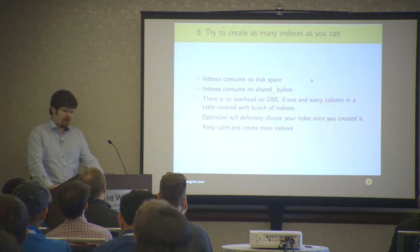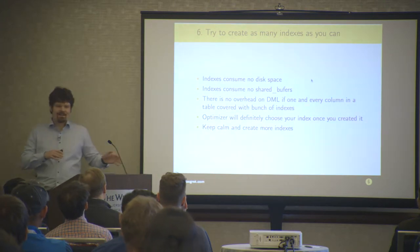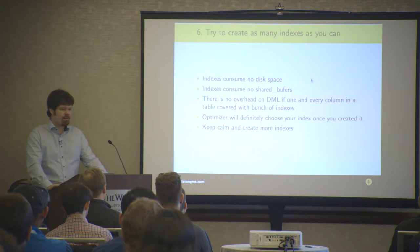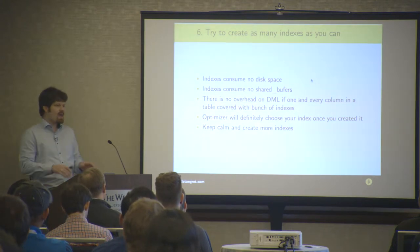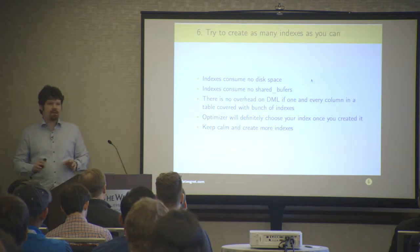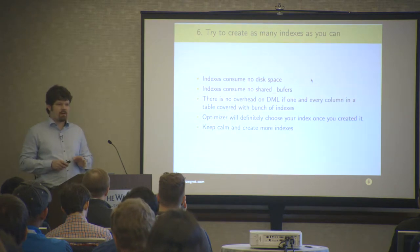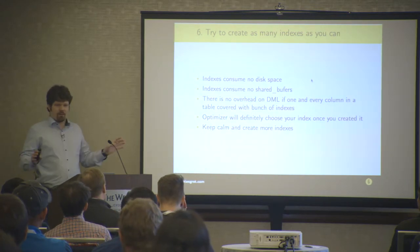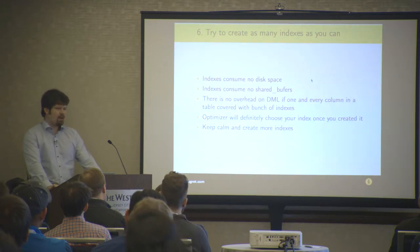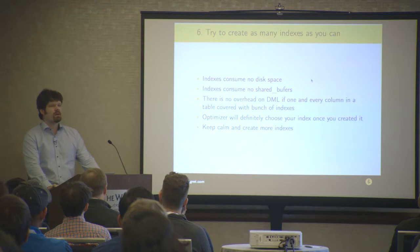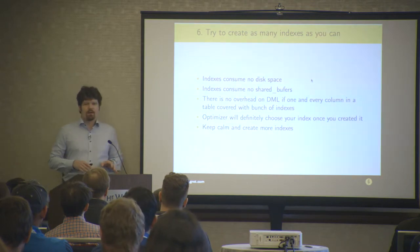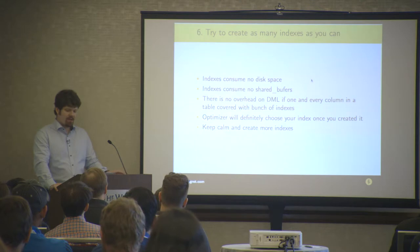Try to create as many indexes as you can. Some of my worst practices are controversial. Indexes consume no disk space — it's true, you know. Indexes do not consume any shared memory. Indexes do not have any types of overhead. Just add 100 indexes to one table, put pgbench on it, and see the results. You will know that I'm telling you the complete truth. The optimizer will definitely choose your index. You can query pg_catalog and see how many times your indexes were actually used, but that's not the topic of this talk. Just keep calm and create more indexes.